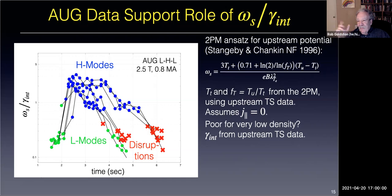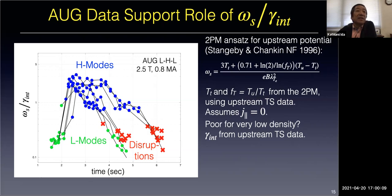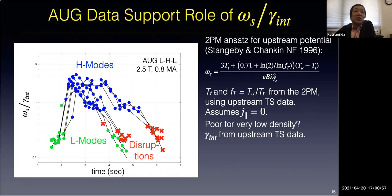Ida: Very interesting idea to discuss turbulence at the separatrix to reduce or enhance things. In general, E-cross-B shear has two effects: one is suppression of local turbulence, and the other is affecting turbulent spreading. In your model you've discussed the more local effect, comparing omega-S with gamma-interchange. Do you have any idea how turbulence spreading could affect the scrape-off layer turbulence? Is there any way to model it?